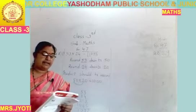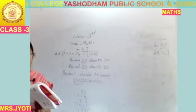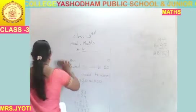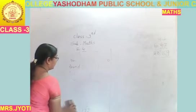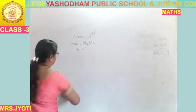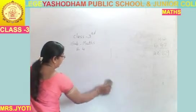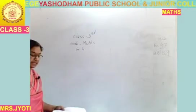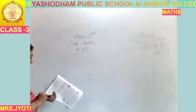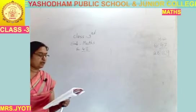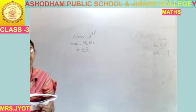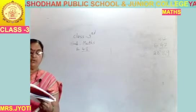Number of garlands to be made: 25. So number of flowers needed: 32 multiplied by 25. The answer is 800. Now the next question is Exercise 4.8.